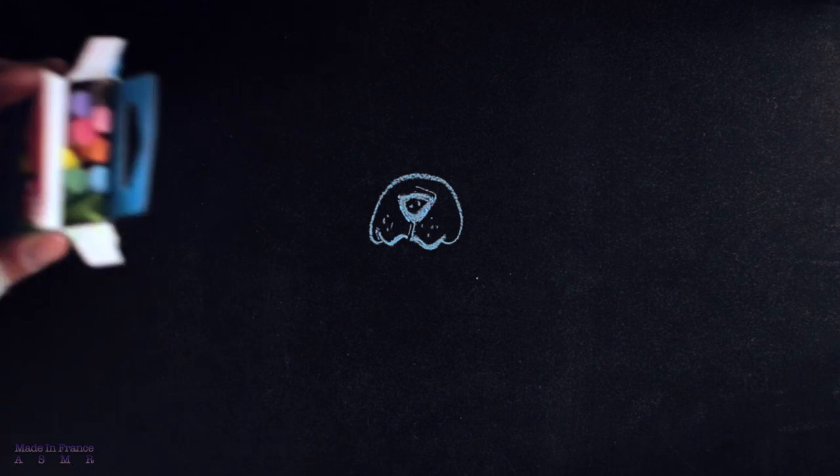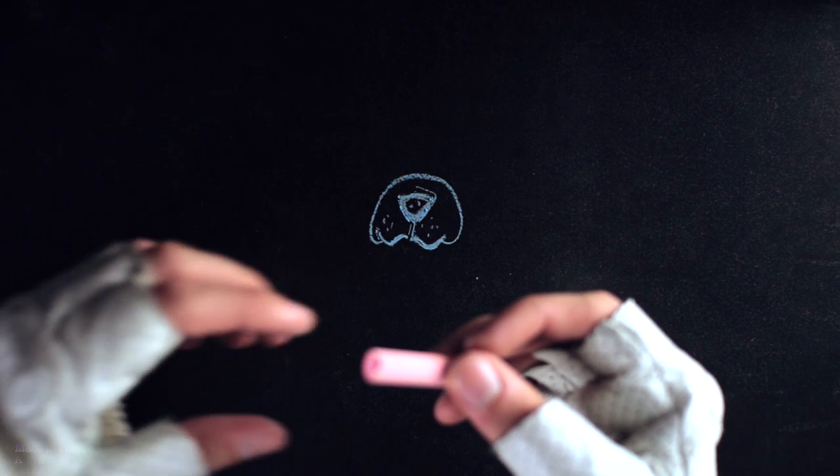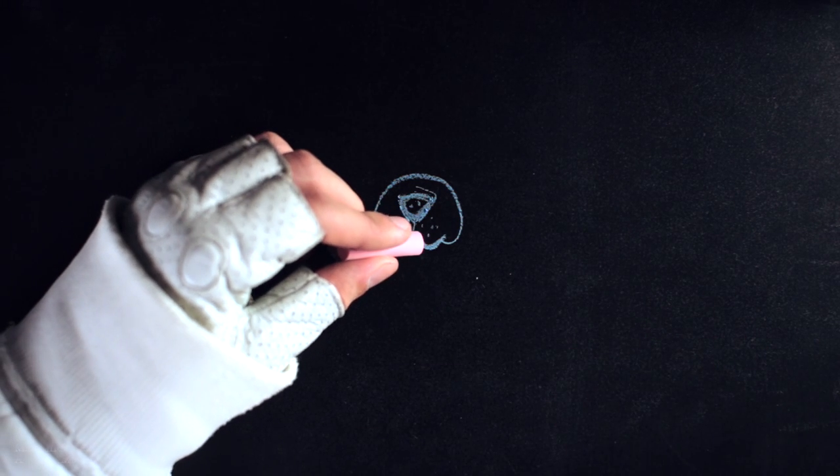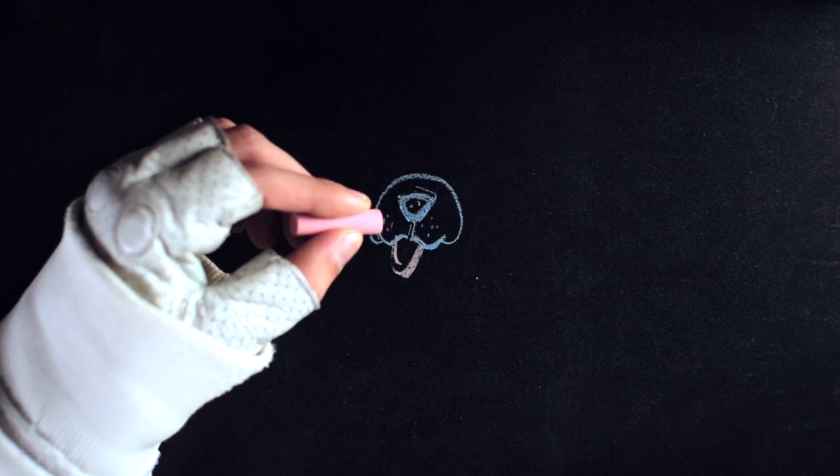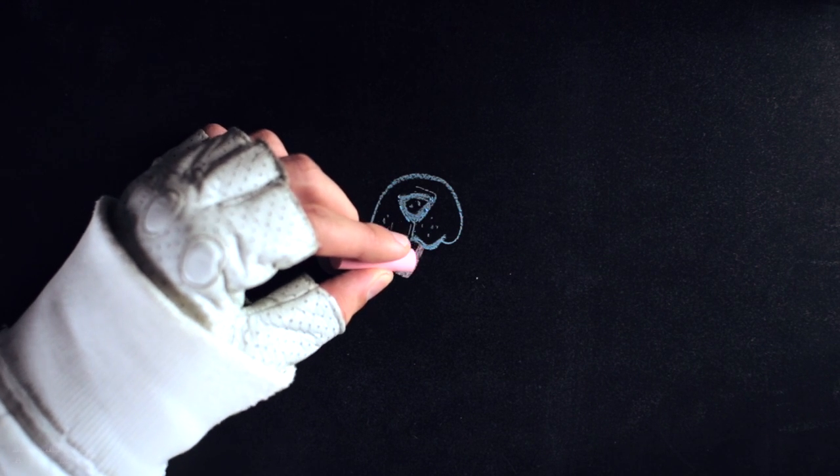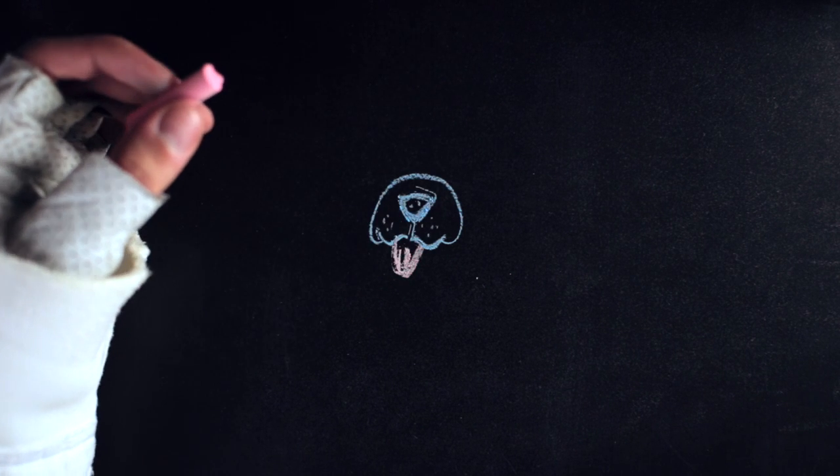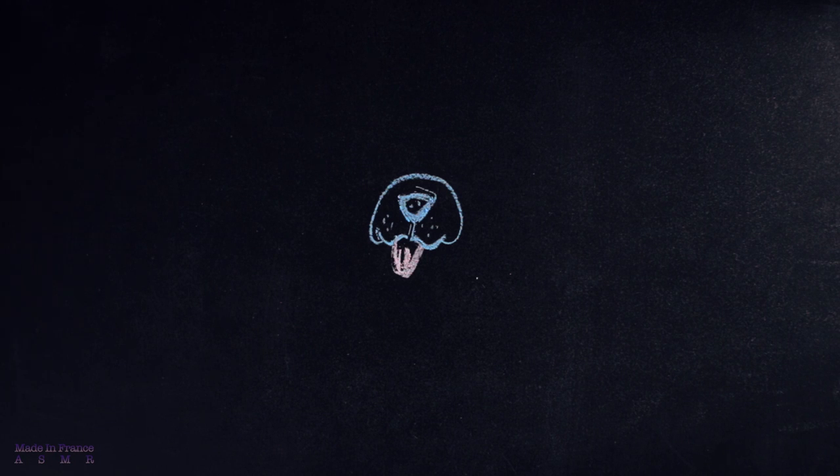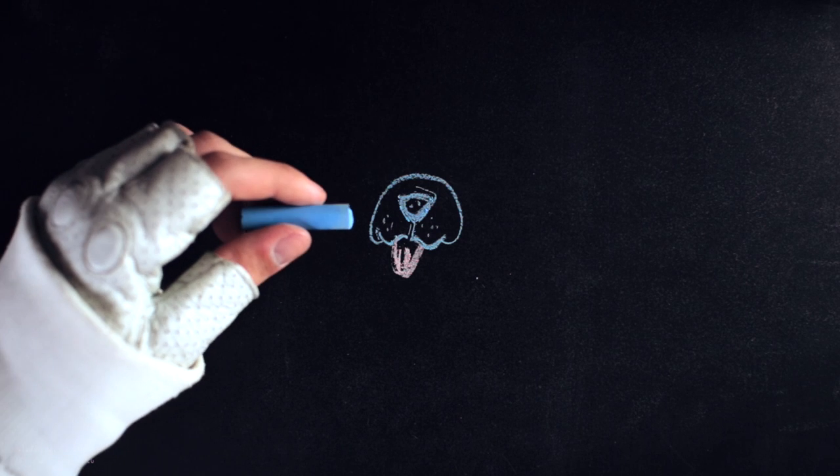Maybe we should make a little tongue in another color. It's barking also. Like this. It's a big tongue. So in French the tongue is le lanc.